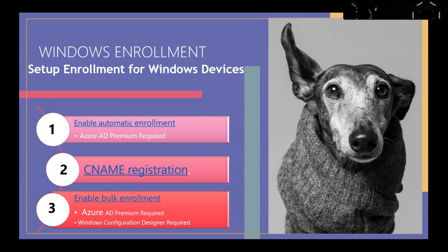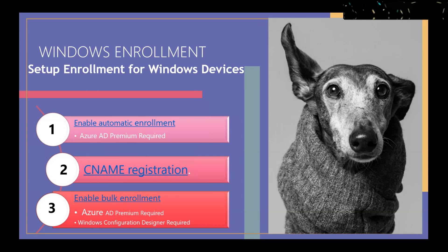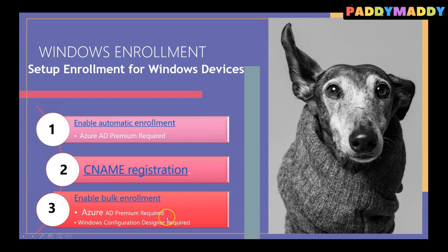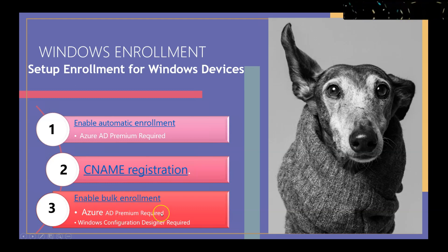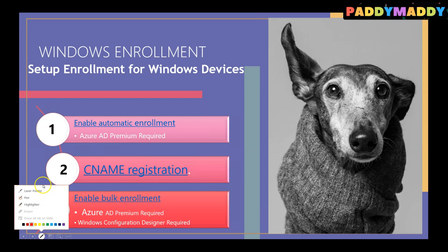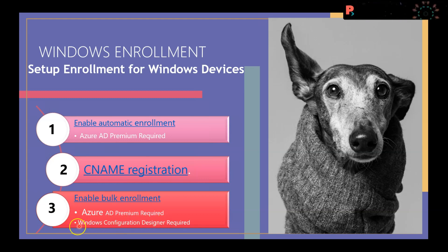Now let's look at a very interesting configuration - something called Enable Bulk Enrollment. This is a tricky part not often discussed. Bulk enrollment requires Azure AD Premium. There's a specific tool that is needed: Windows Configuration Designer, or WCD for short.